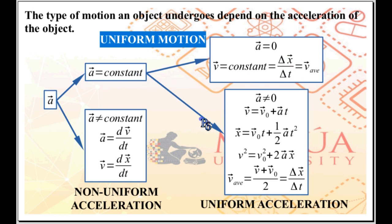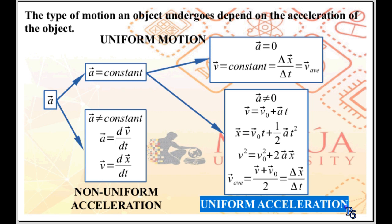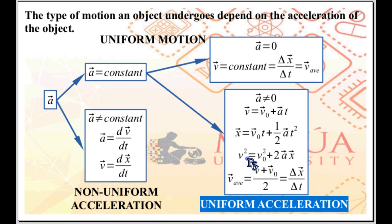On the other hand, if acceleration is constant at a non-zero value — uniform acceleration — you have four equations to choose from. Final velocity equals initial velocity plus acceleration times time. Displacement equals initial velocity times time plus one-half acceleration times t squared. V squared equals V₀ squared plus 2ax. Average velocity equals the average of initial and final velocity: (V plus V₀) divided by 2, and V-average also equals delta x over delta t, or x over t.